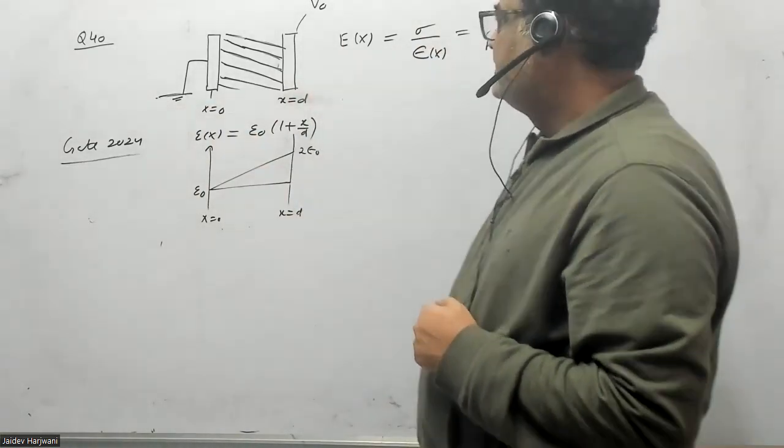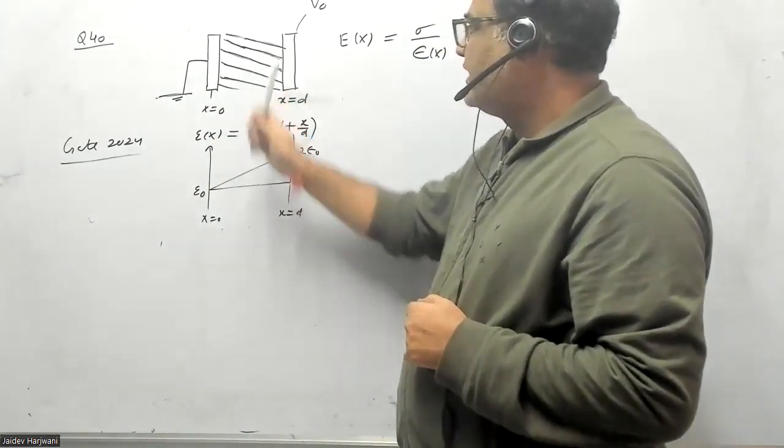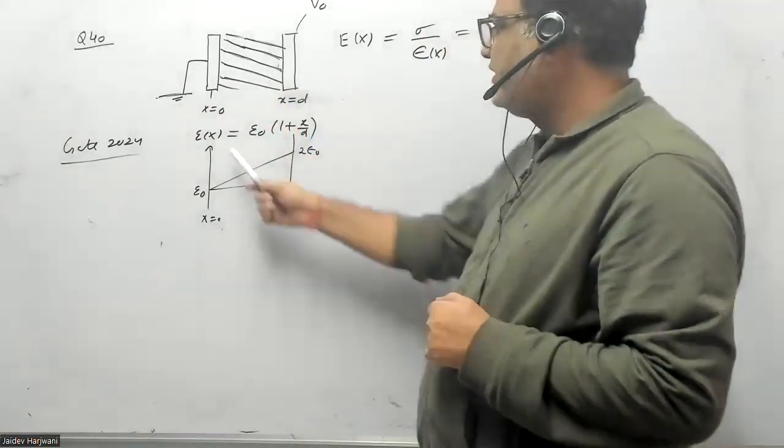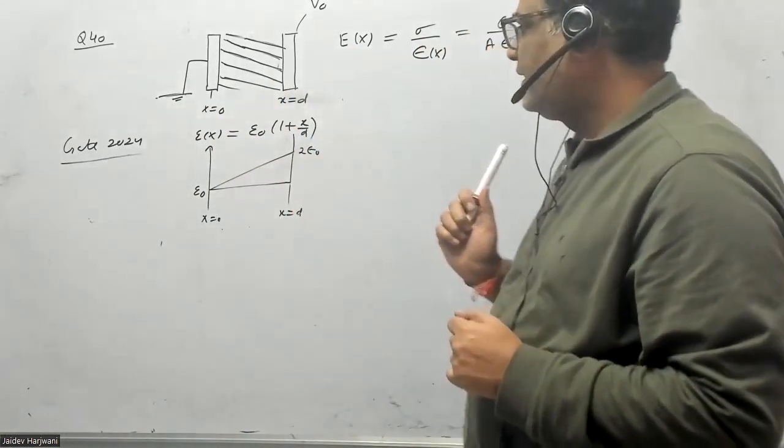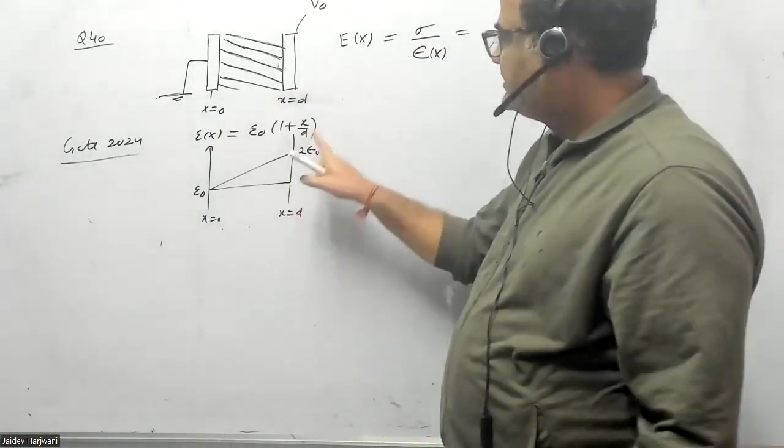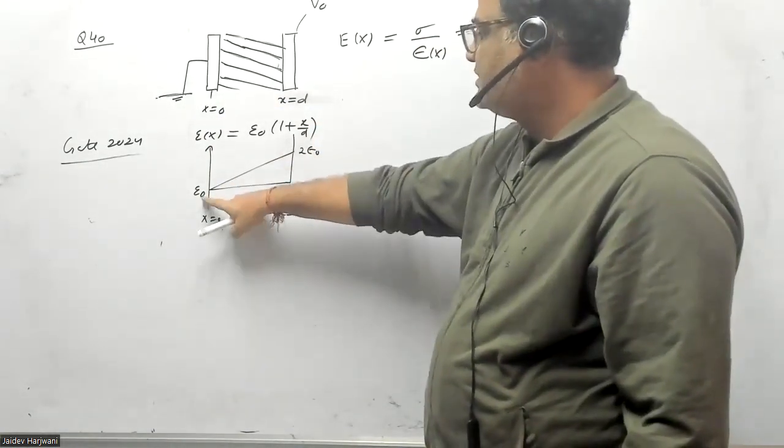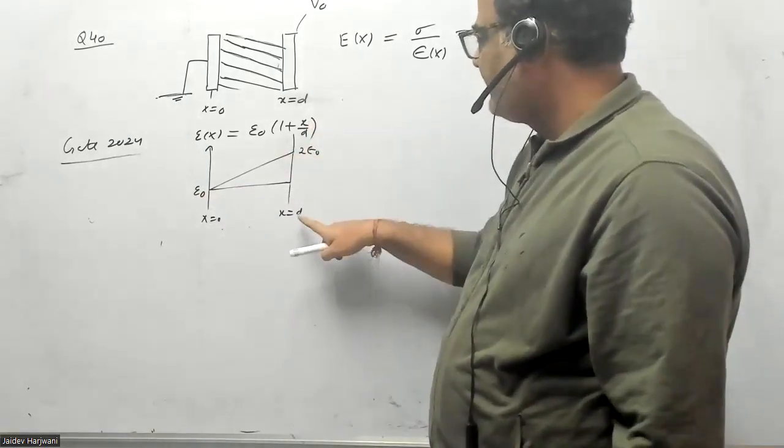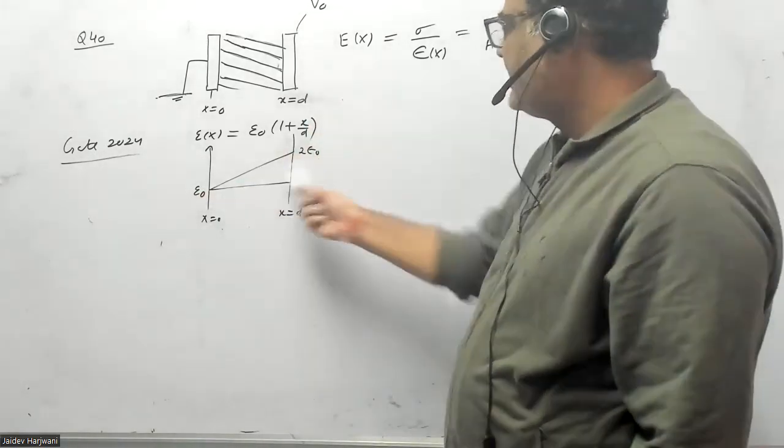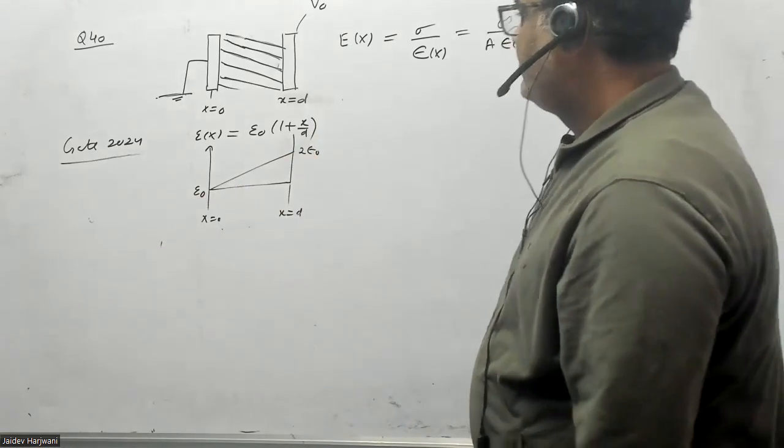Between the plates there's a dielectric material whose permittivity is varying with X, given by this equation. If you put X equals zero, the permittivity is ε naught. If you put X equals D, the permittivity is 2ε naught. So it's varying with X. Now they're asking what is the electric field inside the capacitor.